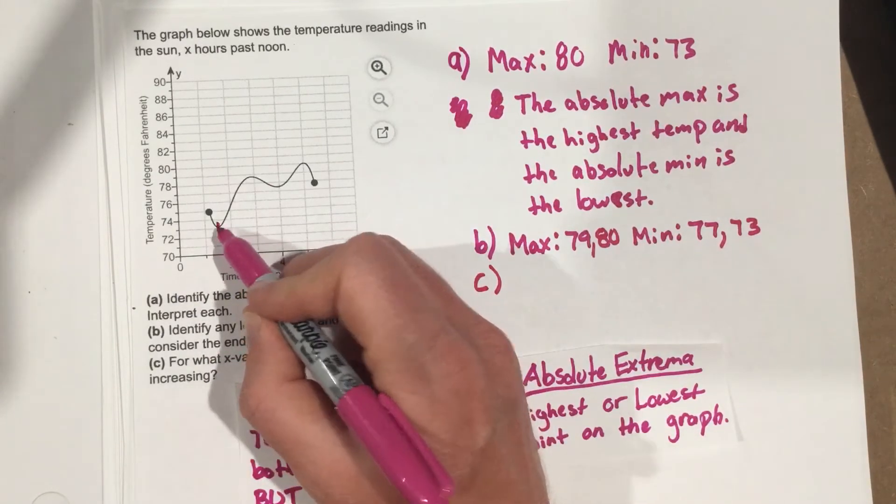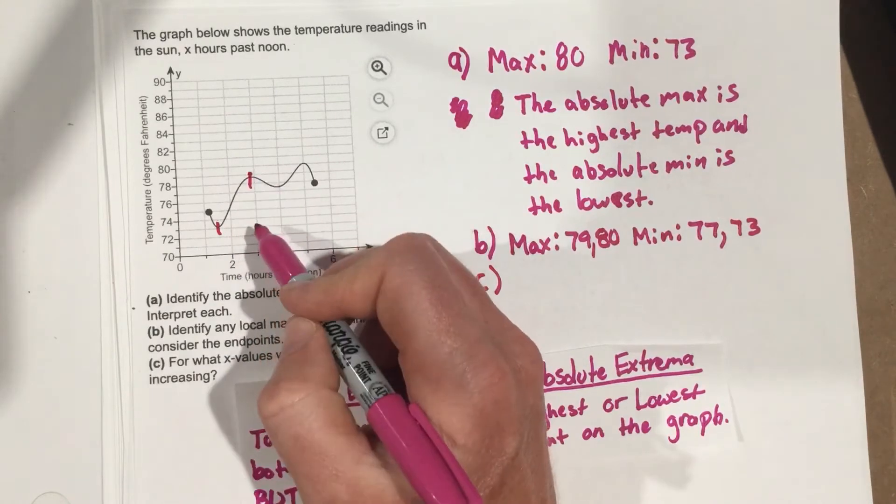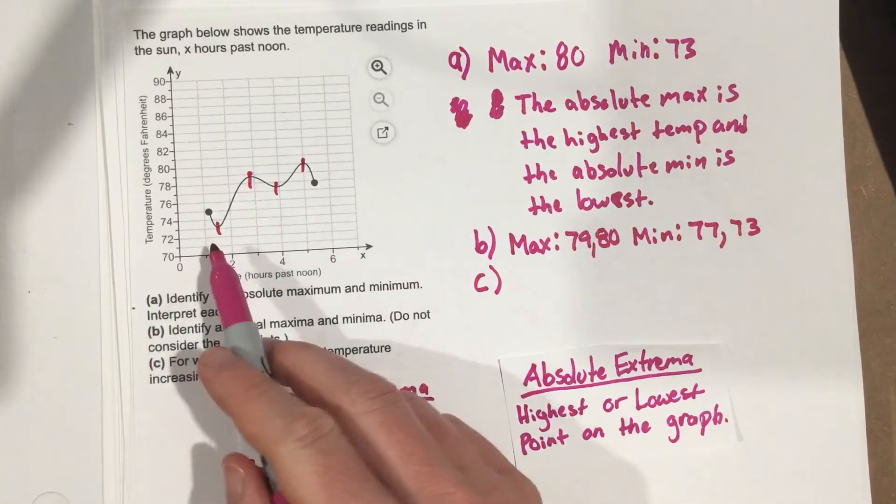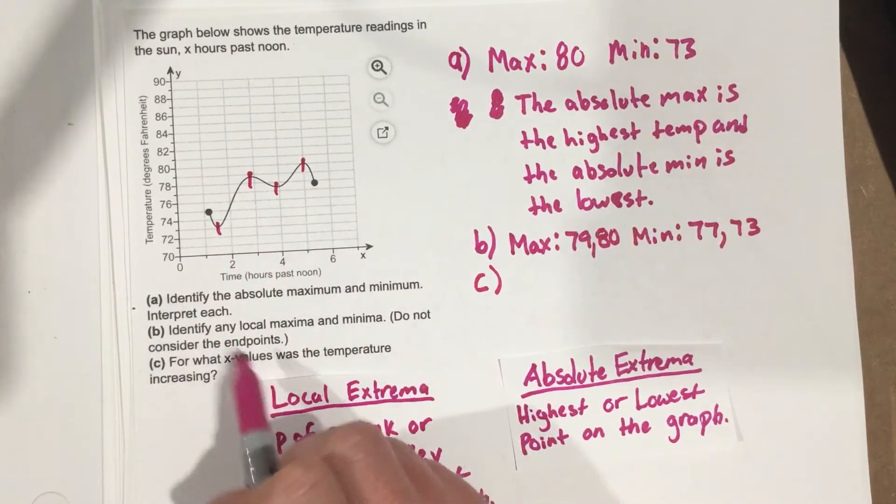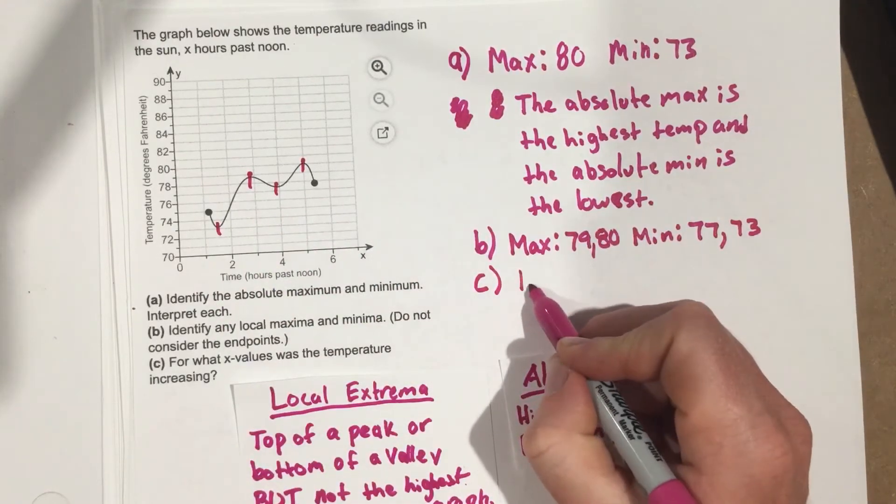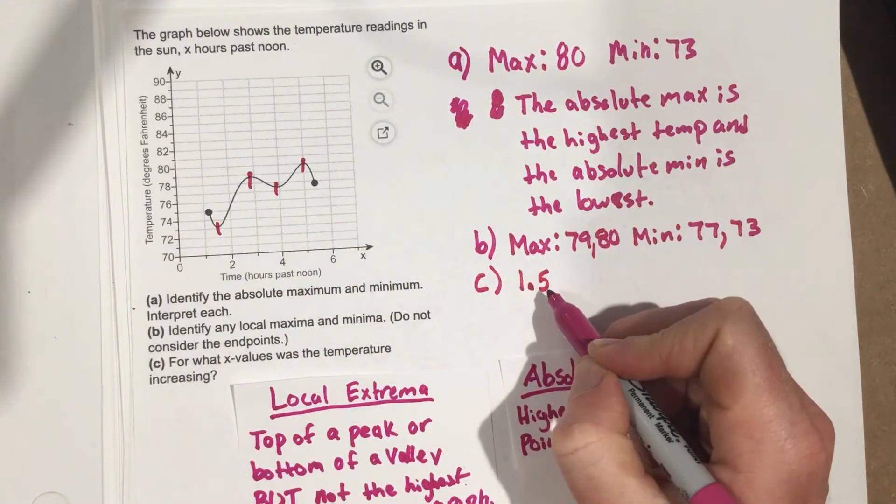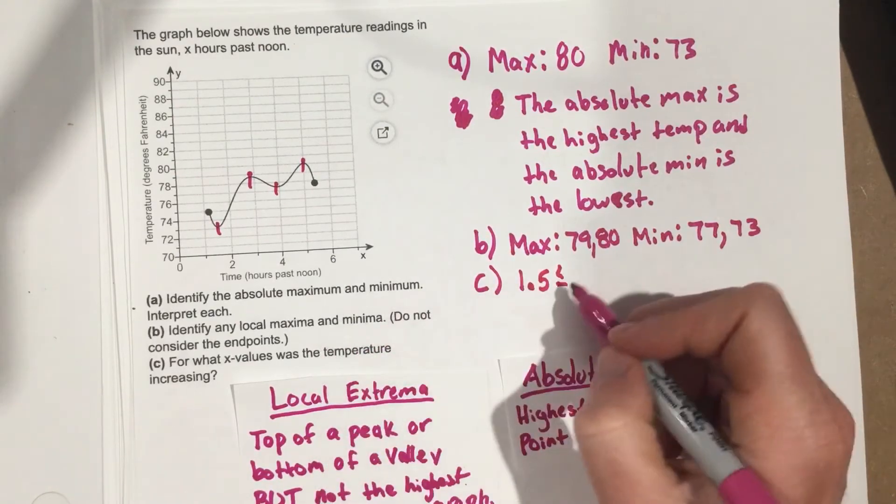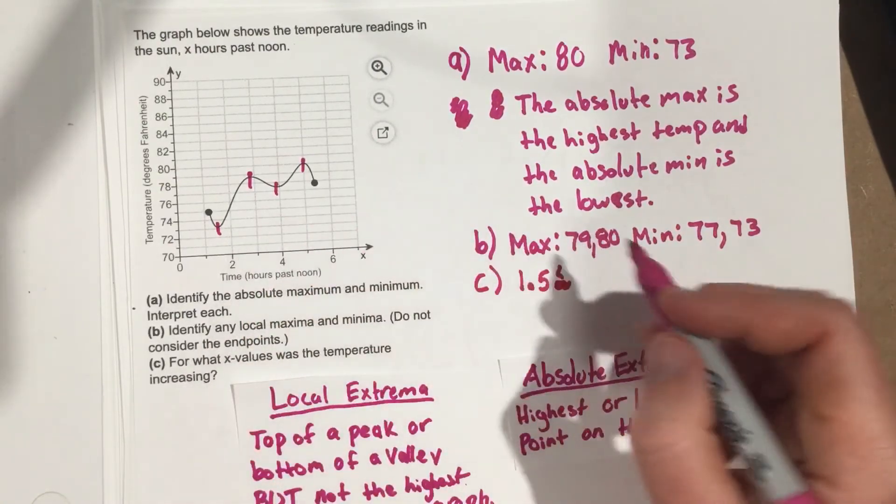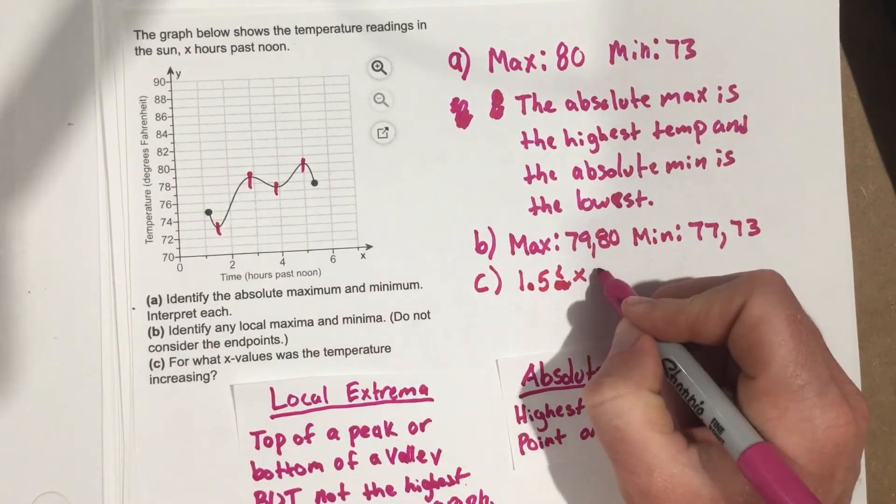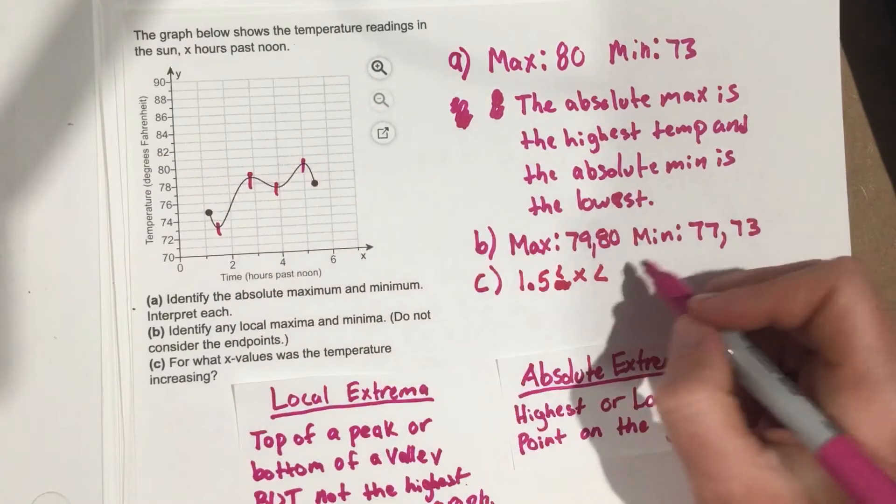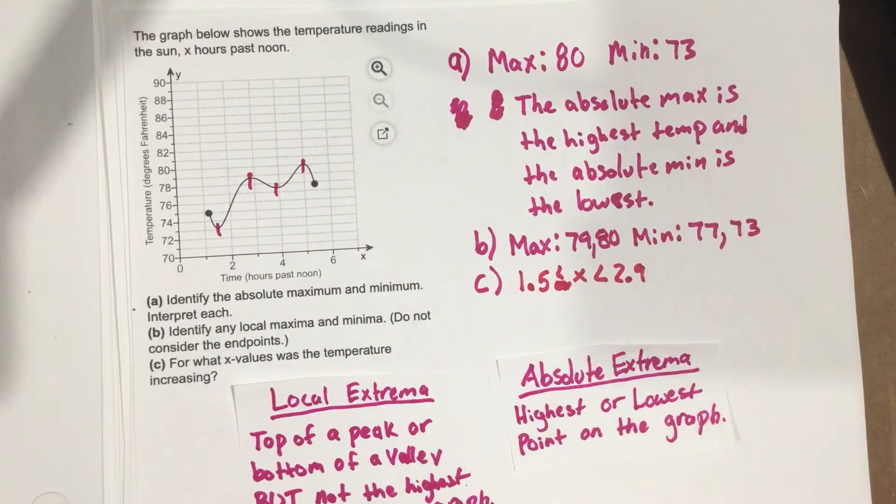It looks like it's increasing from x equals 1.5. Actually, we wouldn't say equal to because at 1.5 it bottoms out, so 1.5 < x < 2.9. Not quite 3, but close.